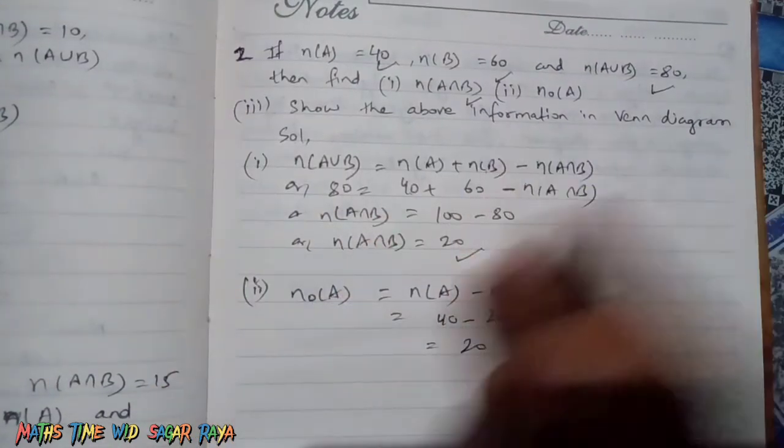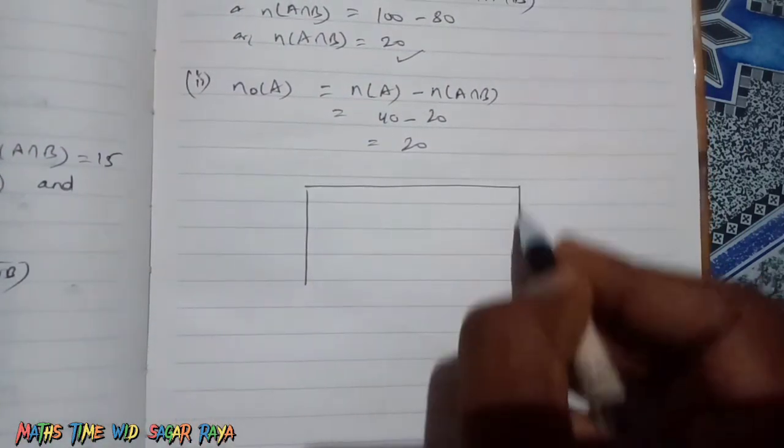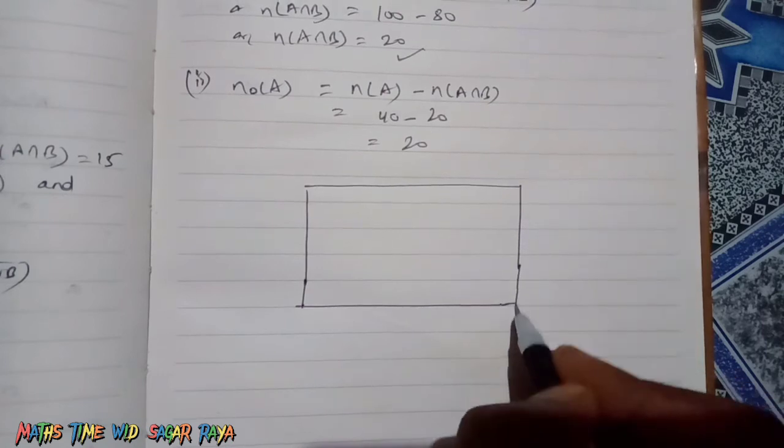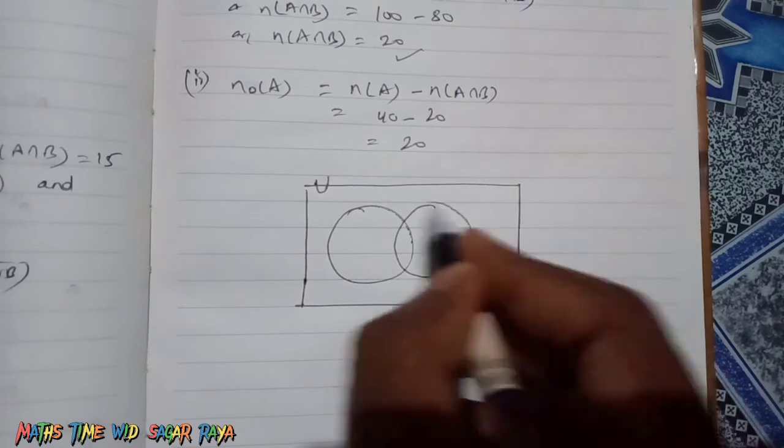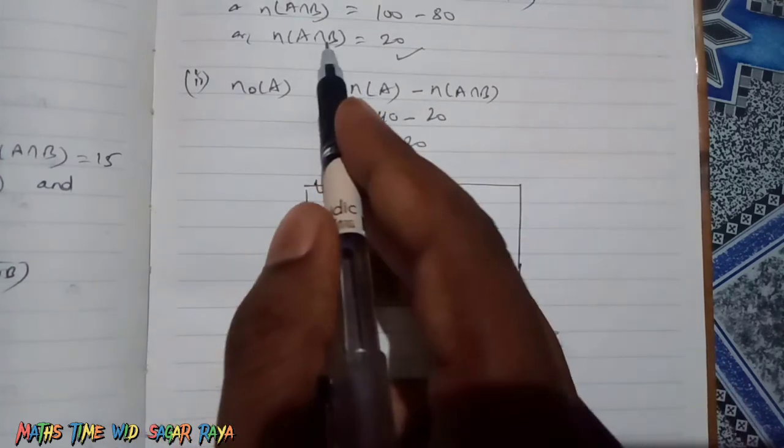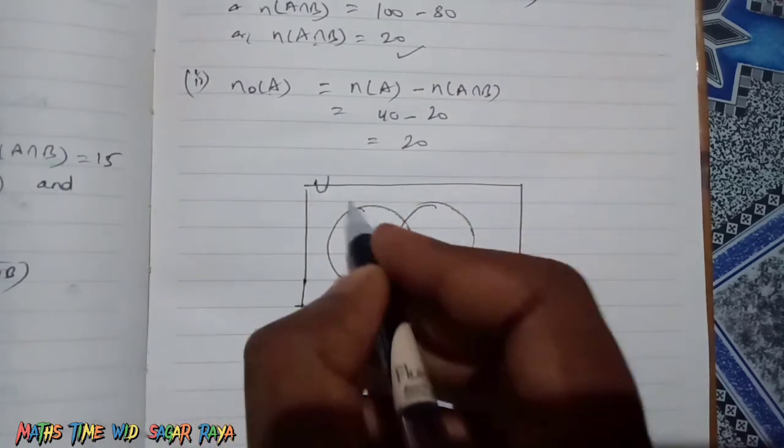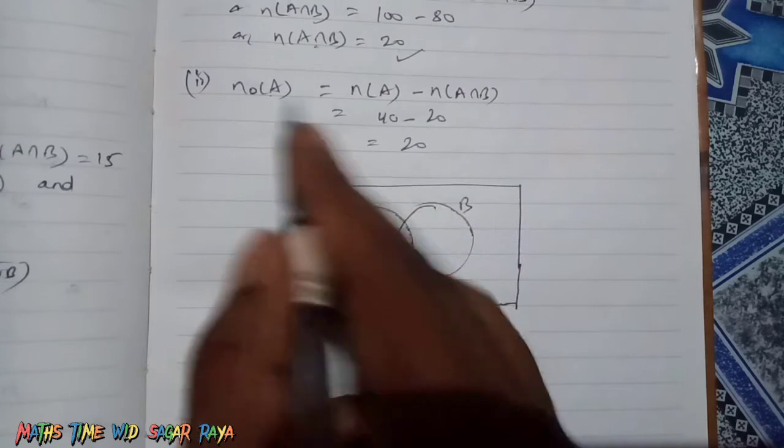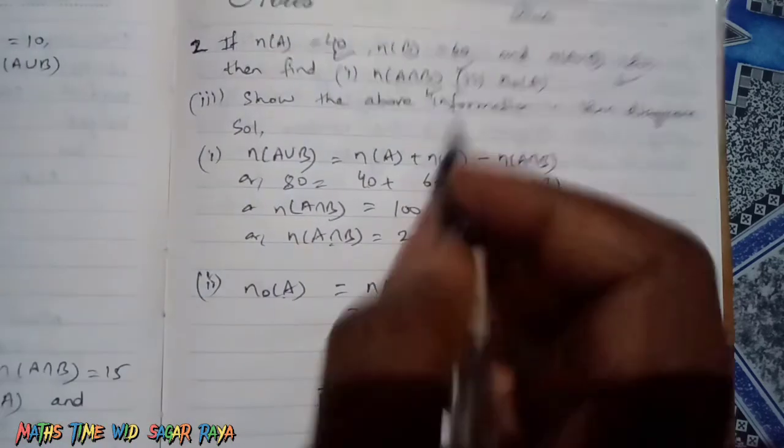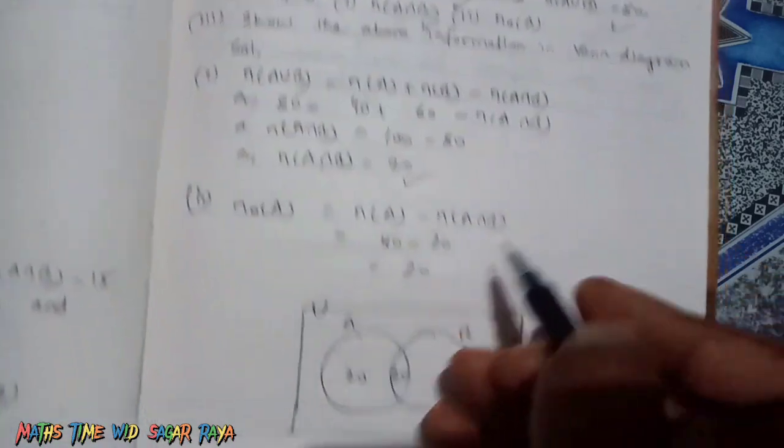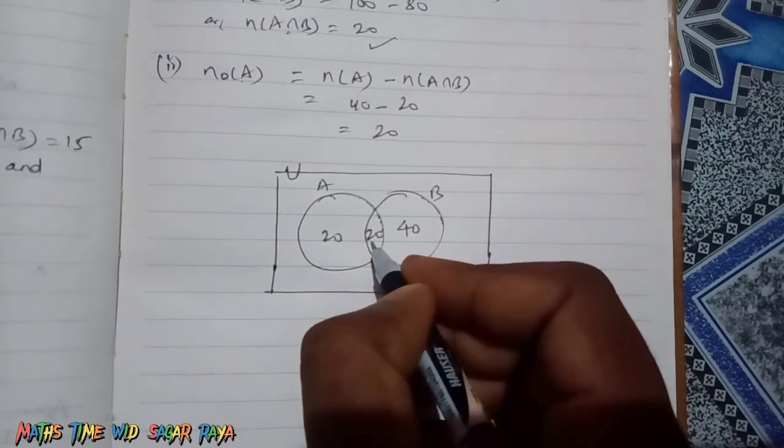Let's make a Venn diagram. At first, we write the intersection part, so n(A∩B) is 20. Then n(only A) is given, so we can directly write n(only A) = 20 here. Let's see how much n(B) is given. n(B) is given as 60, and 20 is already here in the intersection, so we have to write 40 in the remaining part of B, because 40 plus 20 equals 60.